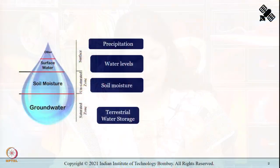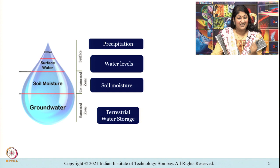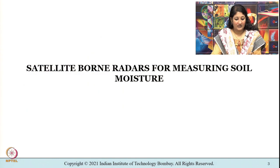Hello and welcome to the fifth lecture of the fourth module. Till now we were trying to understand the various applications of radar remote sensing in hydrology — how precipitation can be measured, and how water levels in rivers can be measured using radars on board spacecraft. In today's lecture we will try to understand how soil moisture as well as terrestrial water storage can be measured using radar remote sensing. Let us start with satellite-borne radars for measuring soil moisture.